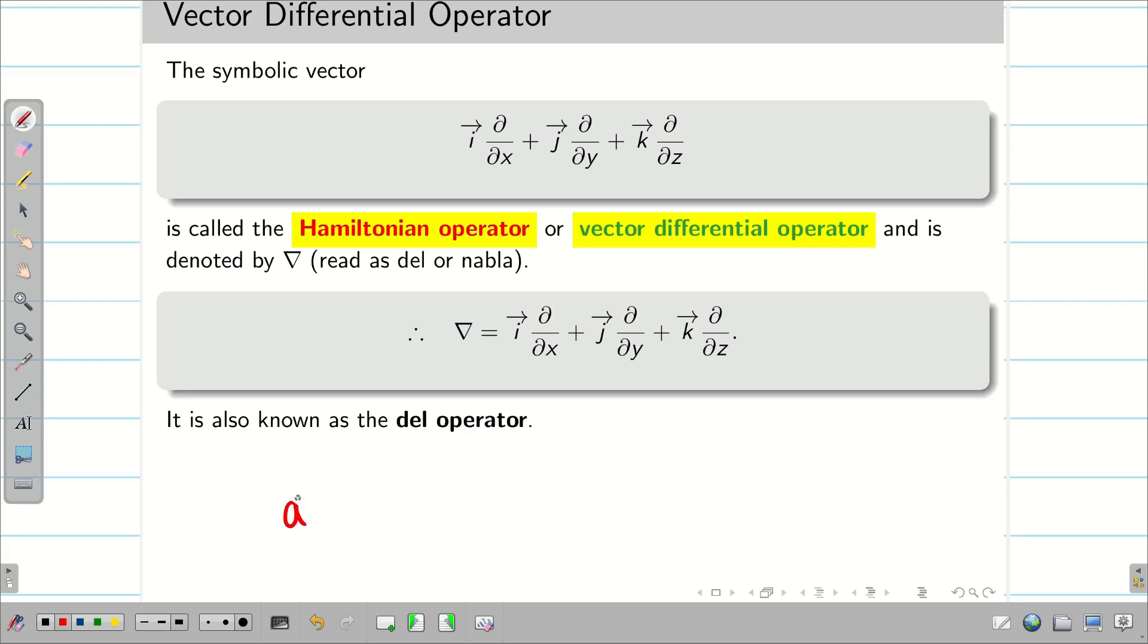In our school days, either for scalar product or vector product, we used two vectors a and b. Now, in vector calculus, instead of a vector, I am going to take del. And instead of b vector, I am going to take a vector field f or f vector. Notations are changing here.